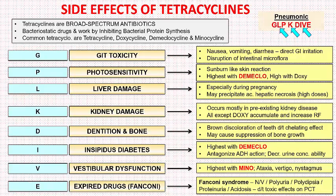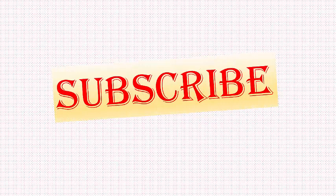To summarize, the highest incidence of photosensitivity and diabetes insipidus is with demeclocycline, and the highest incidence of vestibular dysfunction is with minocycline. If you find this beneficial, please share, and if you have not subscribed yet, please do. Thank you.